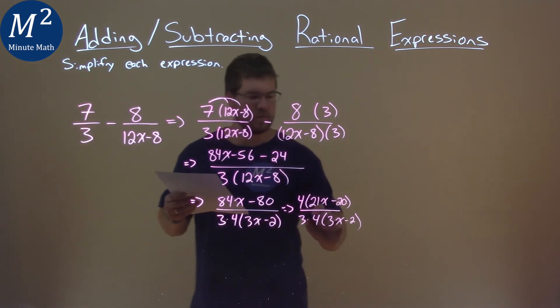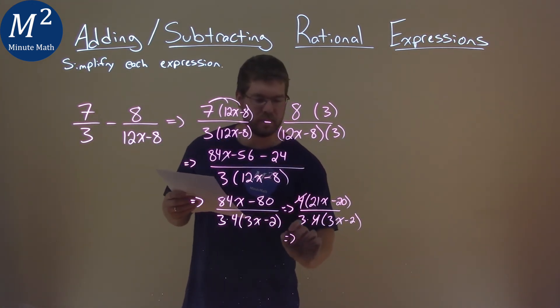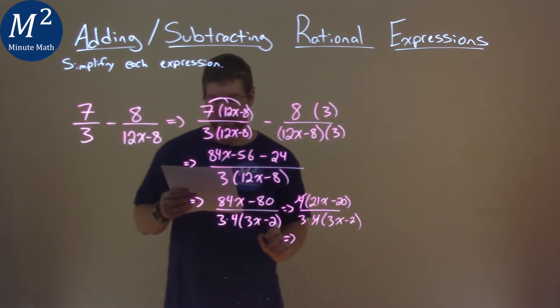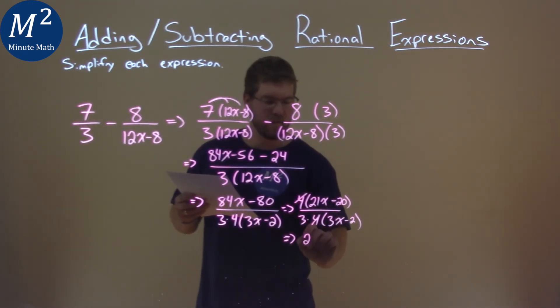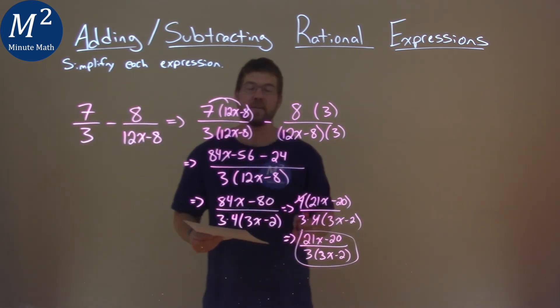Notice now the 4s will cancel here, getting more simplified. Moving downwards, we have 21x - 20 over 3 times (3x-2). And that is our final answer.